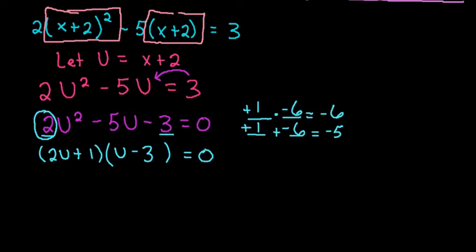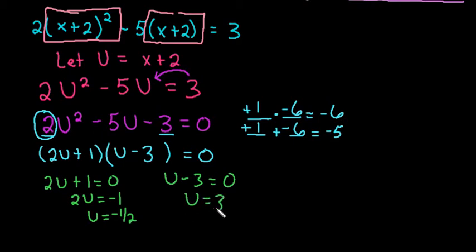So we have factored it correctly. It does work out. So what we want to do now is we want to take and solve each equation. So 2u plus 1 equals 0. So if I solve this by taking the 1 to the opposite side, it would become a negative. So our first answer is u equals negative 1 half. And our second one, u minus 3 equals 0. We would end up with u equals 3.